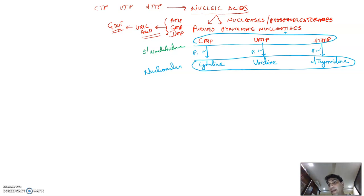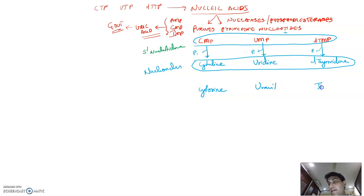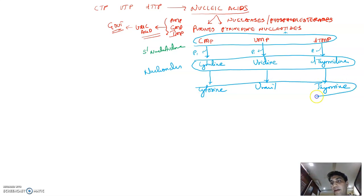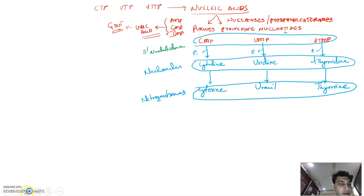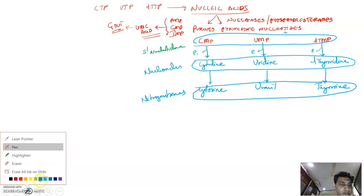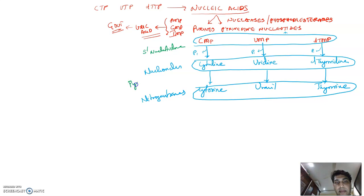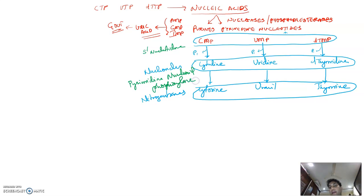Cytidine, uridine, and thymidine can then be converted to their nitrogenous bases — that is cytosine, uracil, and thymine — by removal of their sugar molecules. This conversion is carried out by the enzyme pyrimidine nucleoside phosphorylase.